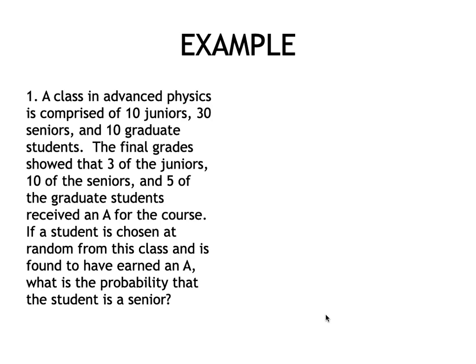There are some examples covered in our module 5.2, so let's go over them one by one. For the first problem: a class in advanced physics is comprised of 10 juniors, 30 seniors, and 10 graduate students. The final grades showed that 3 of the juniors, 10 of the seniors, and 5 of the graduate students received an A. If a student is chosen at random and is found to have earned an A, what is the probability that the student is a senior?